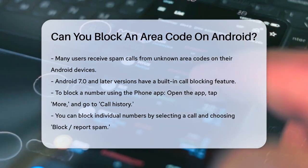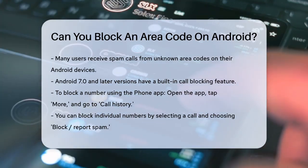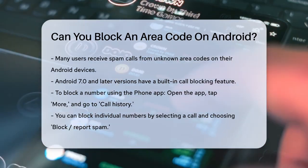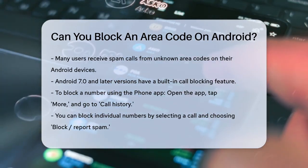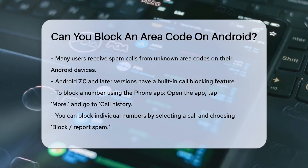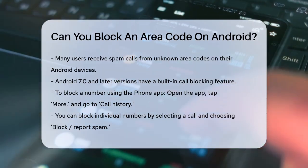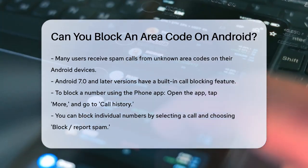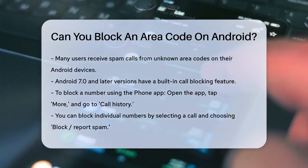To block area codes on Android, you can use a combination of built-in features and specific apps. Starting with the built-in features, Android 7.0 and later versions have a system-level blocking feature.